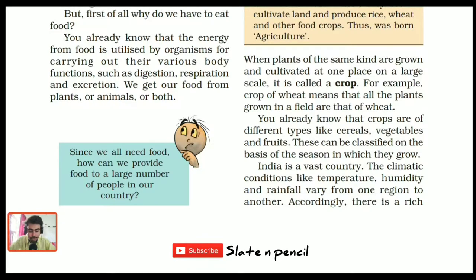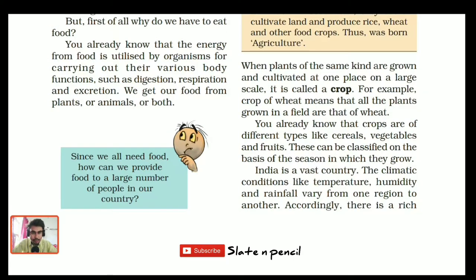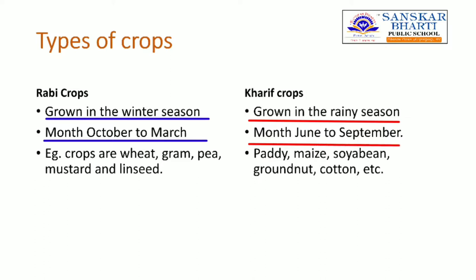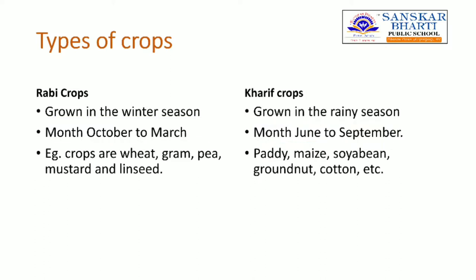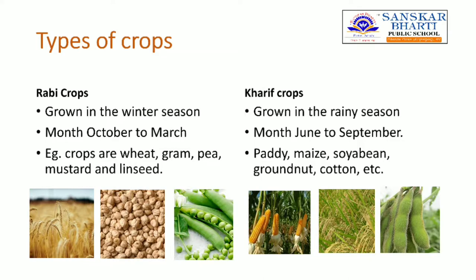These are all classified on the basis of the season they grow. Based on the climatic conditions of India, crops are broadly classified as Rabi crop and Kharif crop. Rabi crops are grown in the winter season from October to March — examples include wheat, gram and pea. Kharif crops are grown in the rainy season from June to September — examples include paddy, maize and soybean.